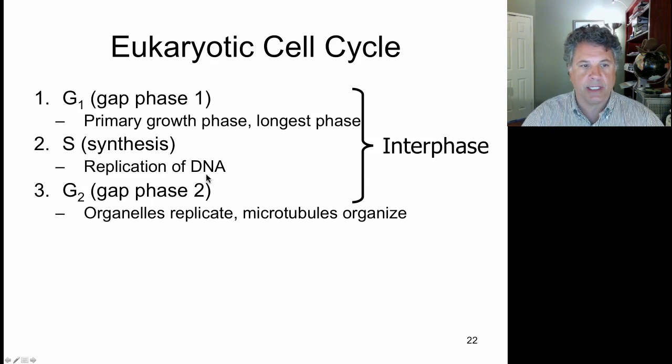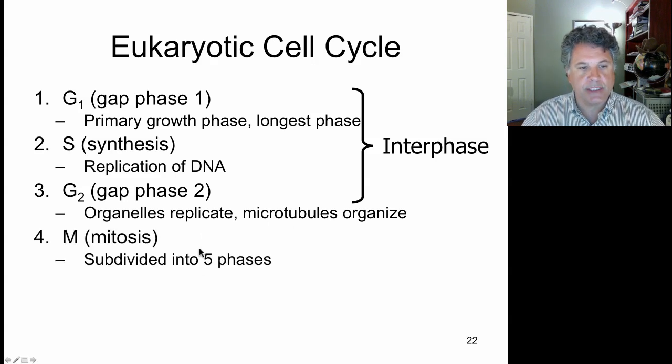Replication of DNA takes place here, and gap two in which the organelles are replicating and the microtubules are beginning to organize into what will eventually be a mitotic spindle that will separate the chromatids in mitosis. Then mitosis proceeds in which the chromosomes are partitioned to prospective daughter cells, and mitosis is actually divided into five different phases.